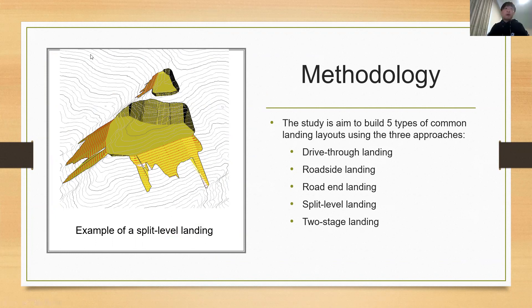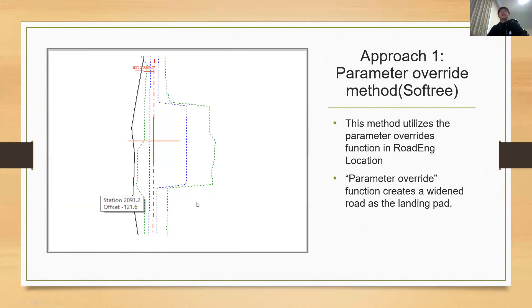Here's an example of a split level landing that is built by RoadEng. The first approach utilizes the parameter override function in RoadEng location module. The function allows users to override the width of the RoadEng template and makes the widened road surface as the landing area.